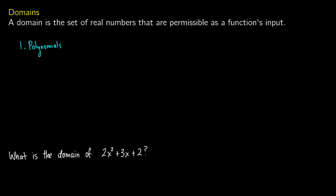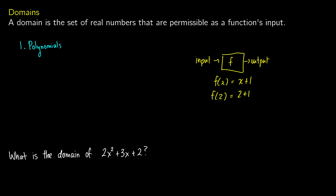The domain of a function is the set of real numbers that you can put as an input. Typically, we think of functions like little machines. You put in an input into your function and you get an output. So this would be something like f of x is equal to x plus 1. We could stick f of 2 in it, and we would get 2 plus 1, and this equals 3. In this case, we can put any number we want into x, and that's fine.